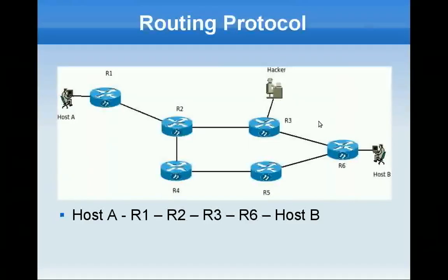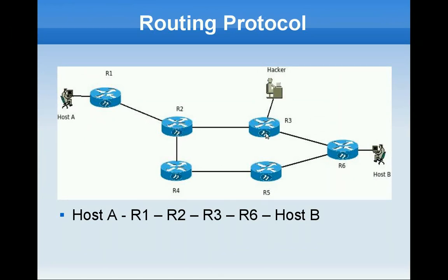Let us first examine normal behavior. Host A is trying to send a packet to host B. Host A would send the packet first to router 1. Router 1 would look up its routing table, send the packet to R2. R2 would again look up its routing table, send the packet to R3, to R6, and all the way to host B.